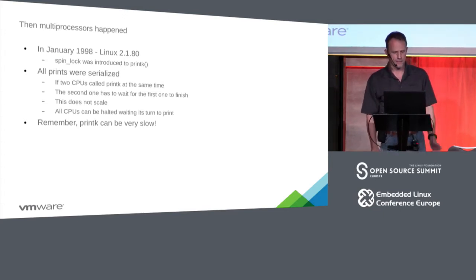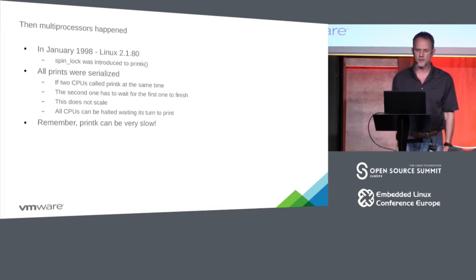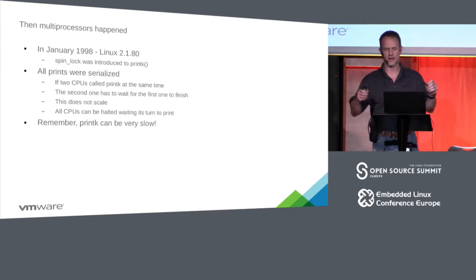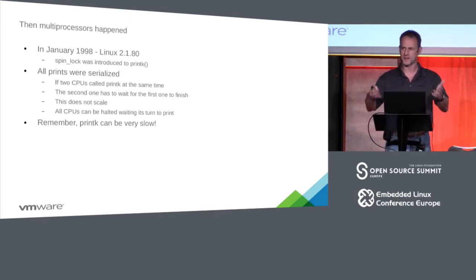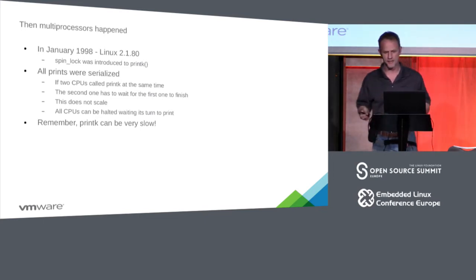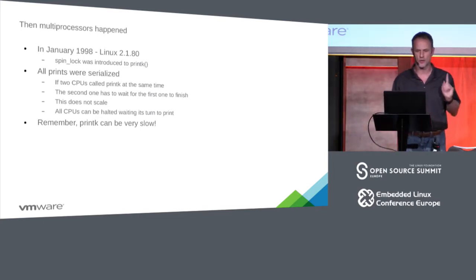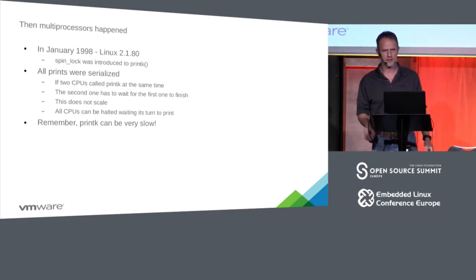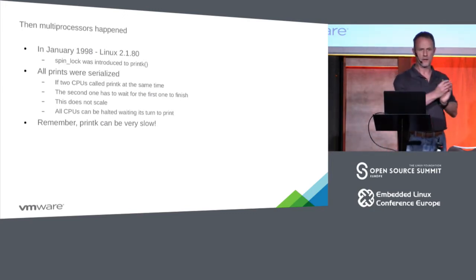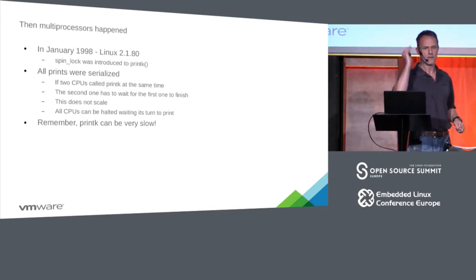Then multiprocessors happened. I did a kind of git-bisect — well, it was before git, so I just kept downloading development trees — finding where the first spin lock appeared in printk. I found it was in January 1998, in 2.1.80: a spin lock was introduced to printk. That's the first time it was actually able to run on a multiprocessor system. All printks were serialized — it grabbed a spin lock at the beginning, did all the prints, wrote to the consoles, everything else, and then finally released.